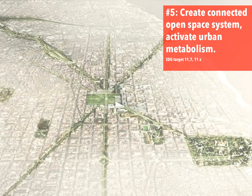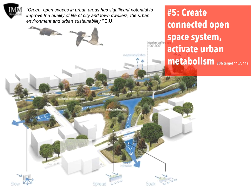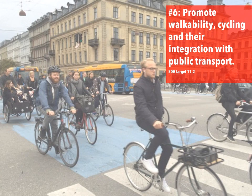DOP No. 5, Create Connected Open Space System, Activate Urban Metabolism, is correlated with the UN's SDG targets 11.7 and 11A. The main aim of this principle is to define a strong connection between city and countryside through the green corridors, also known as green fingers. A secondary aim is to promote the implementation of an integrated open and public green system for fostering the urban metabolism.